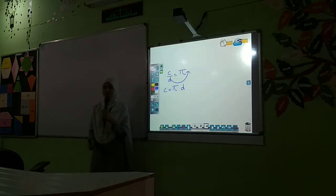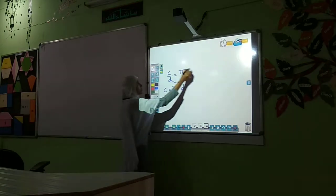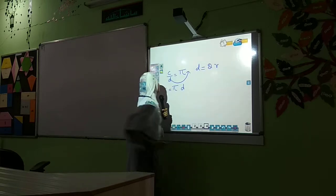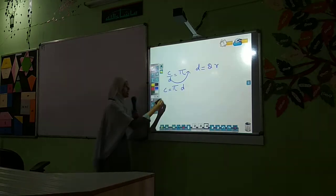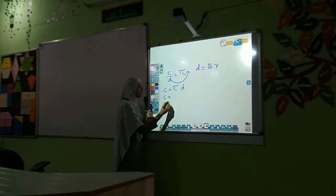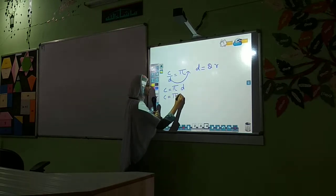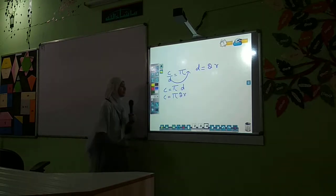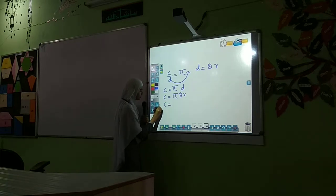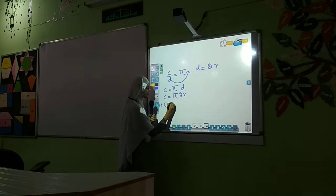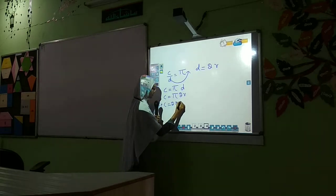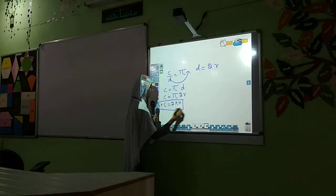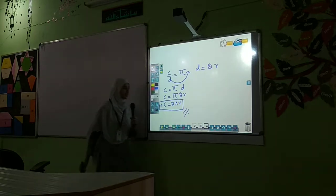Using the transposing method, d is dividing on one side, so when it comes to the other side it multiplies. Therefore, C — that is, circumference — is equal to π into d. We already discussed that d is equal to twice the radius, so expanding d as 2r gives us C = 2πr. This is the formula to find the circumference of a circle.